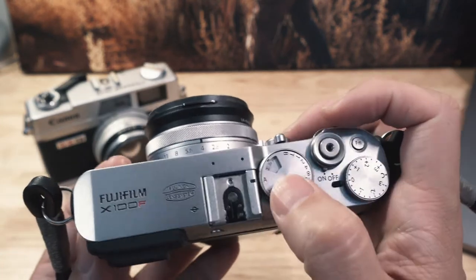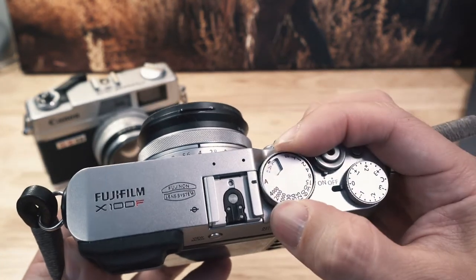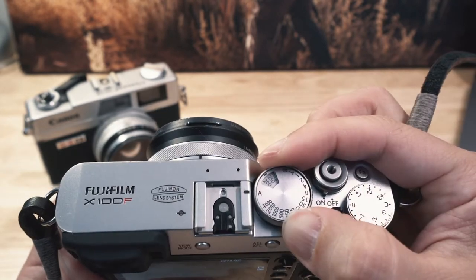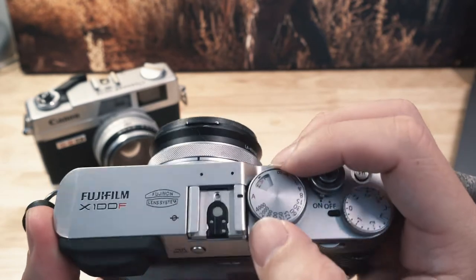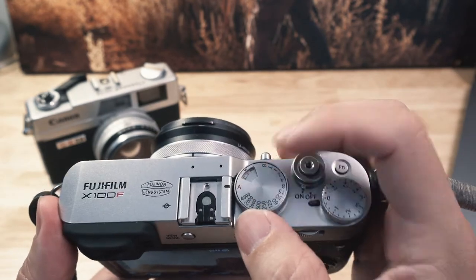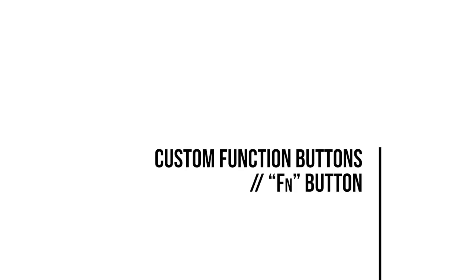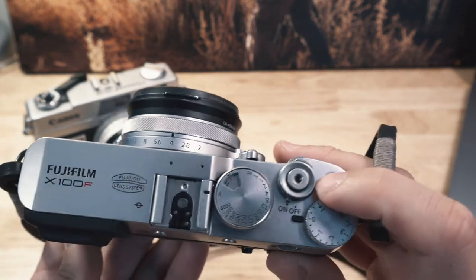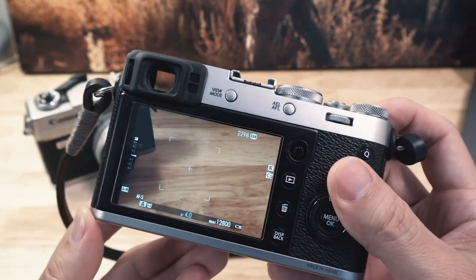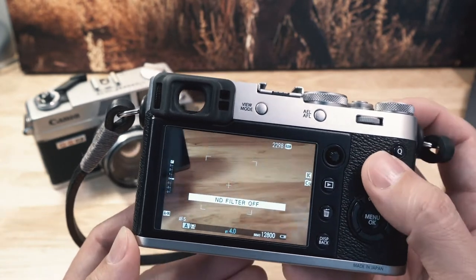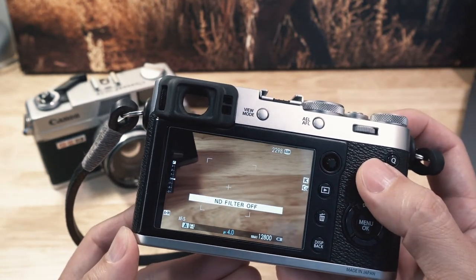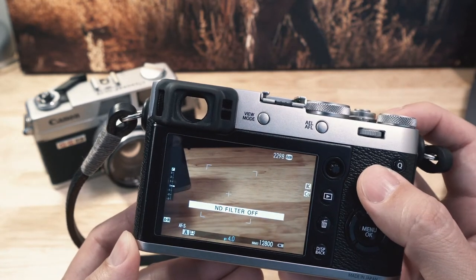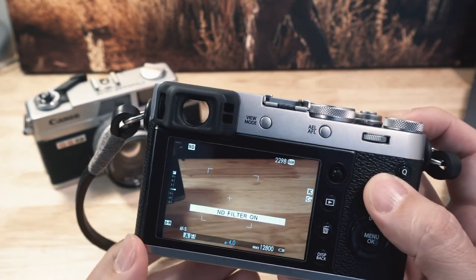I also keep it on auto shutter speed and auto ISO — you can lift the dial to change ISO to manual if you'd like, but I keep it on auto for the most part. For custom buttons, I set the function button to the ND filter on and off. It's one of those things where if you need it, you need it quick — you don't want to dig through the menu system to find it.